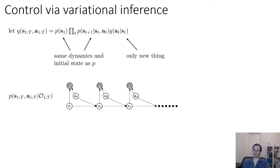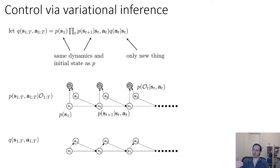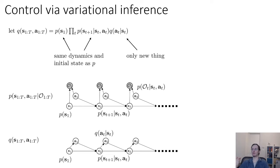We can represent this graphically. The real graphical model has observed variables O_1 through T and unobserved variables — the S's and A's — with initial state, transition probabilities, and optimality variable probabilities. The approximation Q has the same initial state distribution and transition probabilities, but the O's are removed and replaced with Q(A_t | S_t). In variational inference the variational distribution does not contain observed variables, so only the S's and A's remain, and Q(A_t | S_t) is the only part we learn.